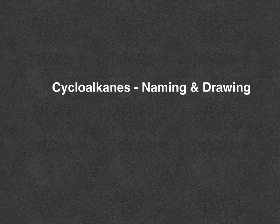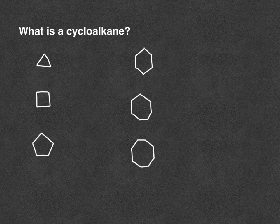In this video we're going to look at naming and drawing cycloalkanes. First we're going to talk about what a cycloalkane is. A cycloalkane is a closed ring structure with only single bonds between the carbons.